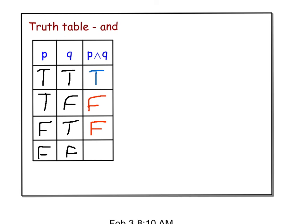In the last example, they're both false, so P AND Q is false.